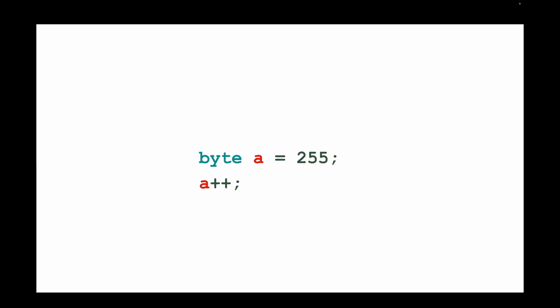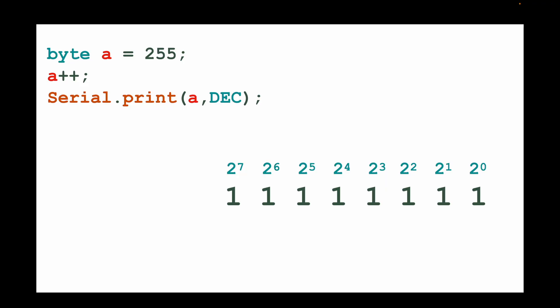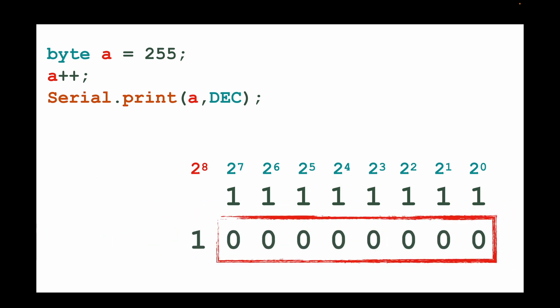But what happens if you have a byte variable with the value 255 and then you try to increment it by one? We take this number, add one, and print it. What happens is we get an overflow — because if we add one more, the result would be 2 to the power of 8, which is 256, but there are only eight bits. The result in this case is just zero. So it jumps from 255 down to zero.